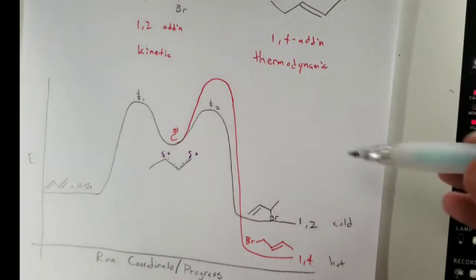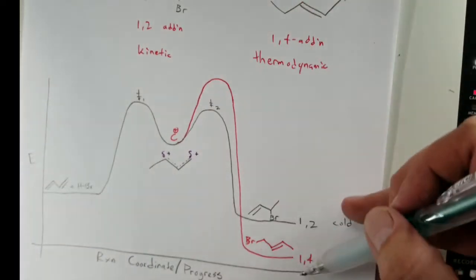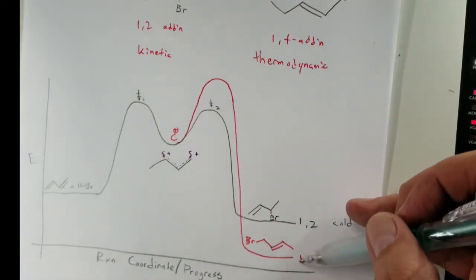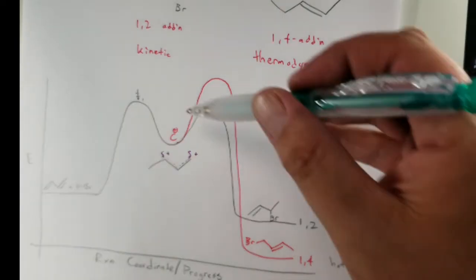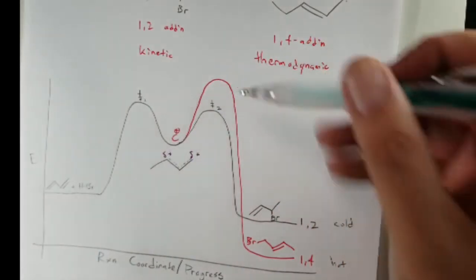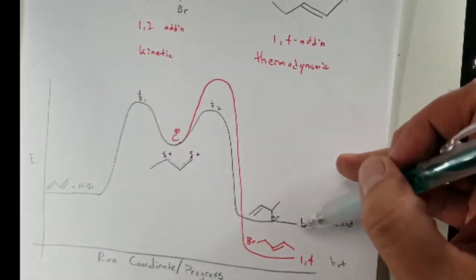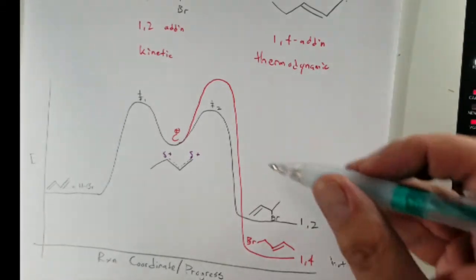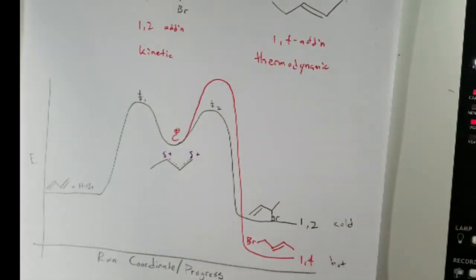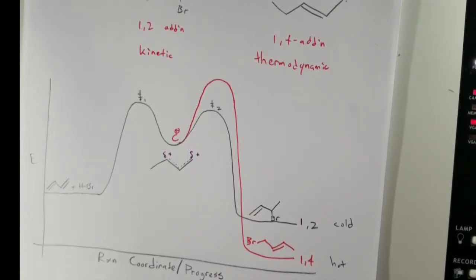To reiterate: to get to the more stable product we have a higher energy intermediate, so there's a higher energy of activation. To get to the less stable product, the intermediate is more stable and there's less energy to get there. When you see these problems they will specify hot or cold. If it's not specified, you should show both products and specify 1,2 versus 1,4.